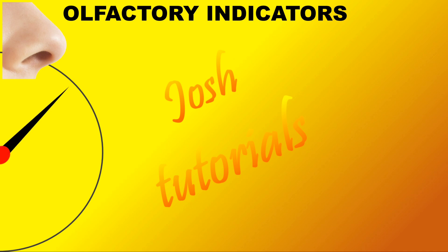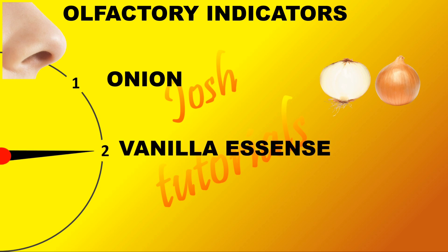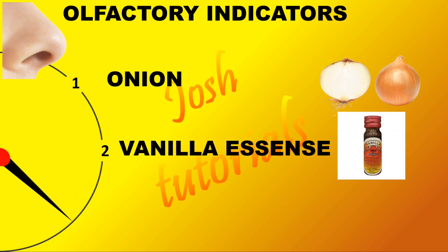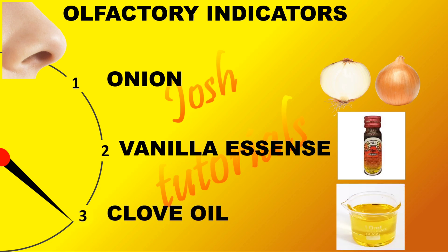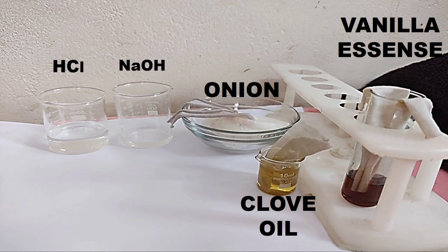In addition to these indicators, some substances change their odor in acidic or basic medium — these are called olfactory indicators. Examples include onion, vanilla essence, and clove oil. To test olfactory indicators: chop onion into pieces and place two pieces of cloth in it kept in the fridge for a day; similarly soak cloth pieces in a bowl of clove oil and in vanilla essence.